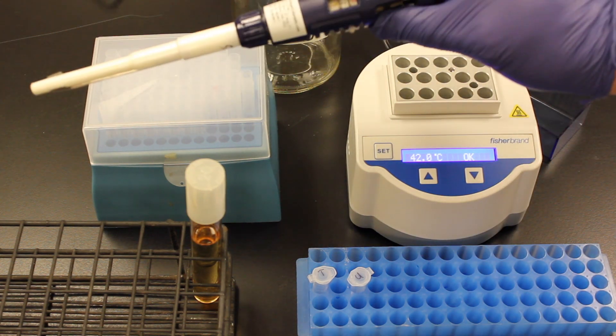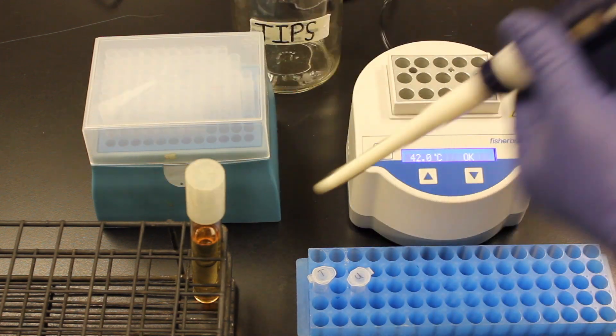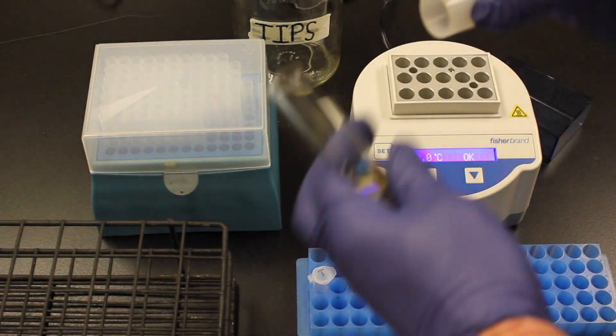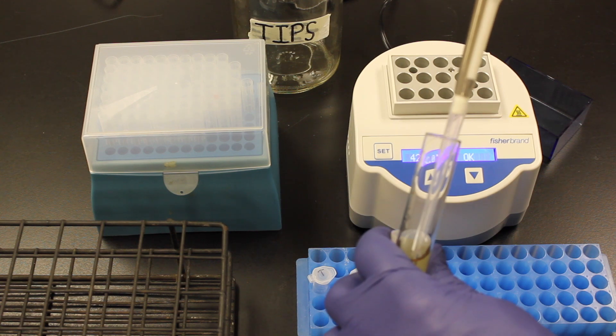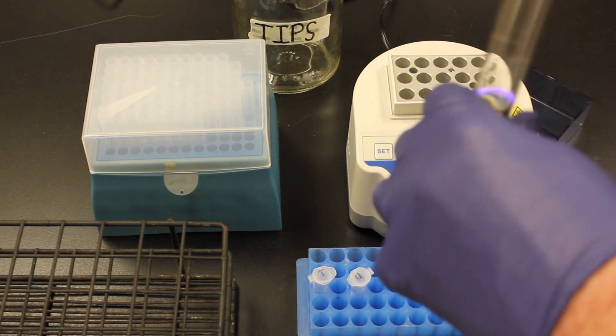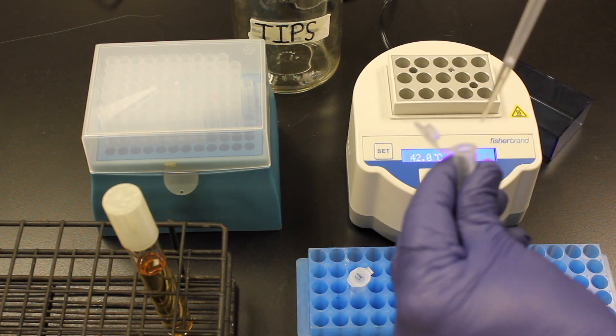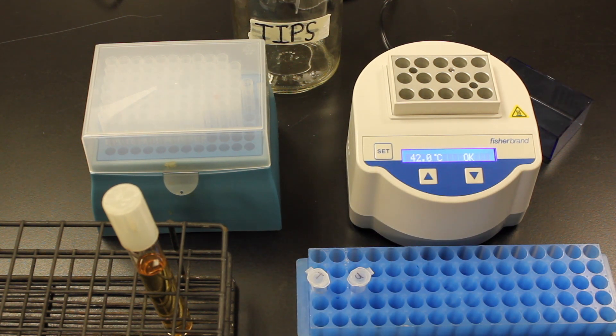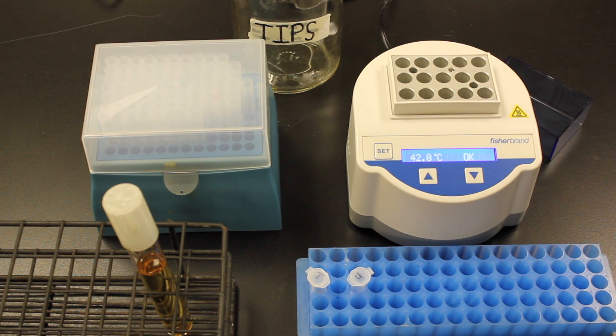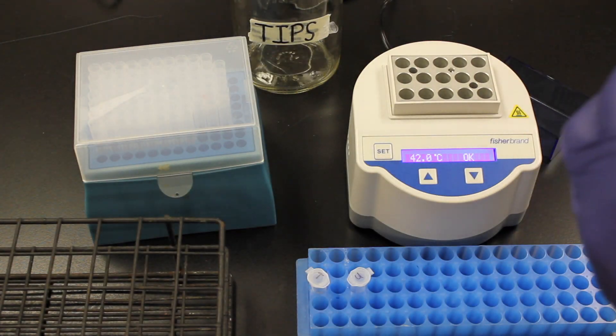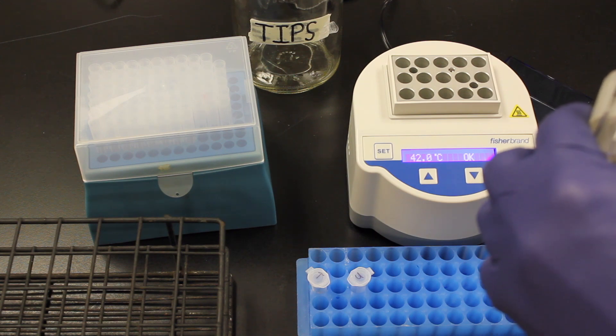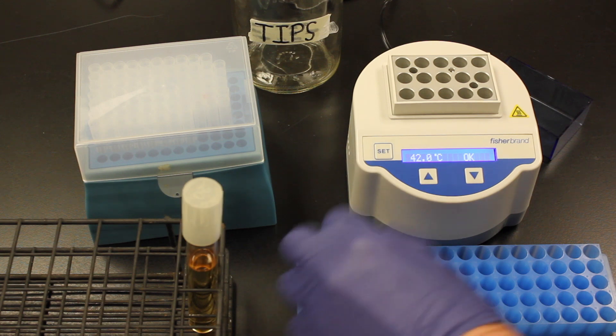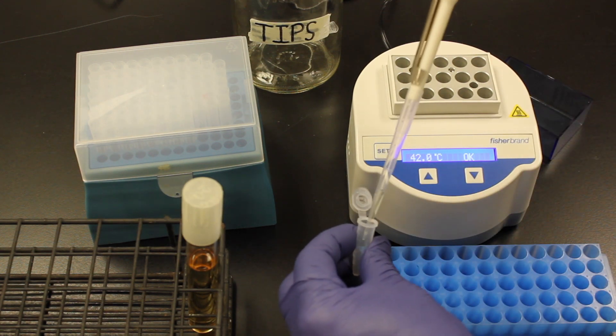Now I want to add 250 microliters. This is a P1000 set at 250 of the LB broth to each of the tubes. So we get a tip and then just get 250 microliters and gently add 250 microliters to the T-tube. And then we will add another tip and add 250 microliters of the LB broth to the U-tube.